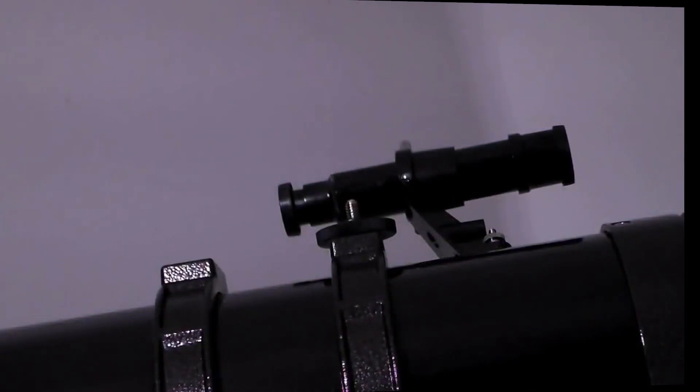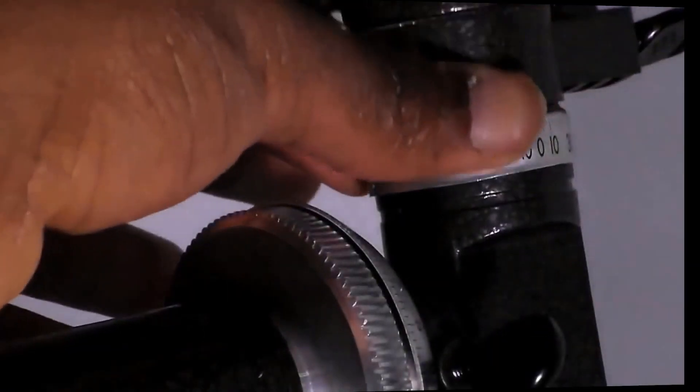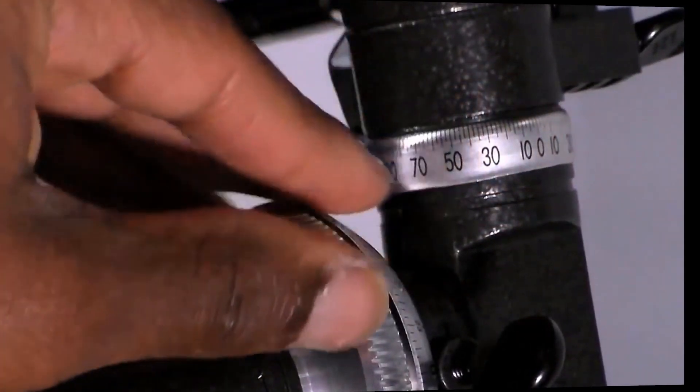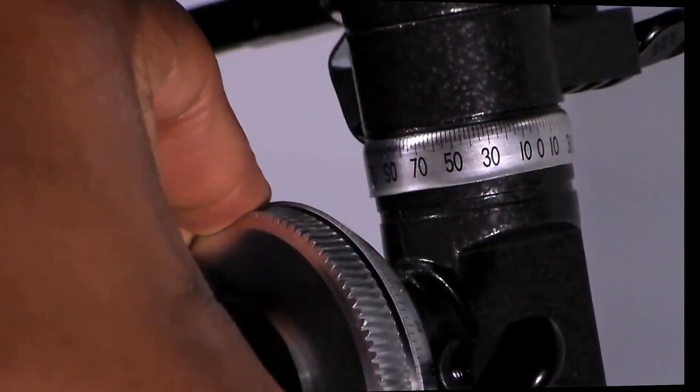The finderscope is used to locate a distant object, but with lower resolution than the main telescope. Without moving the main telescope, turn the adjustment thumbscrews around the finderscope bracket until the crosshairs of the finderscope are centered on the object chosen with the main telescope.